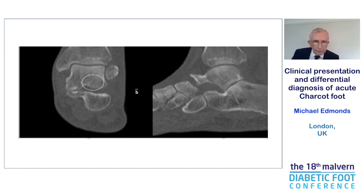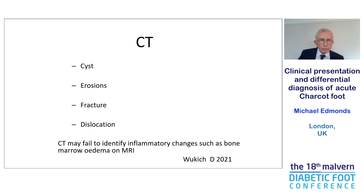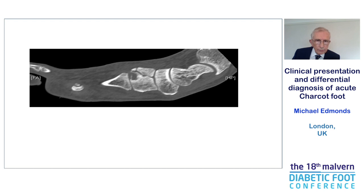You may argue, why not just do a CT? It may pick up cysts, erosions, fracture, or dislocation, but it won't pick up inflammatory changes such as bone marrow edema. However, if you look at the first metatarsal and medial cuneiform on x-ray, you can see cystic lesions, and on the lateral view a cystic lesion and fragmentation also indicative of a Charcot foot.